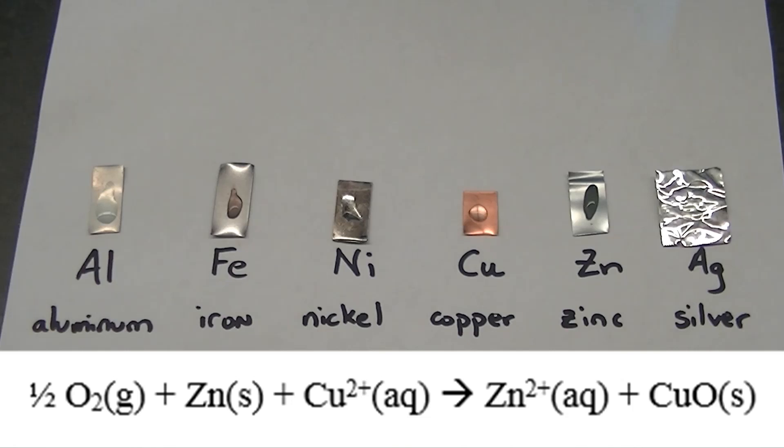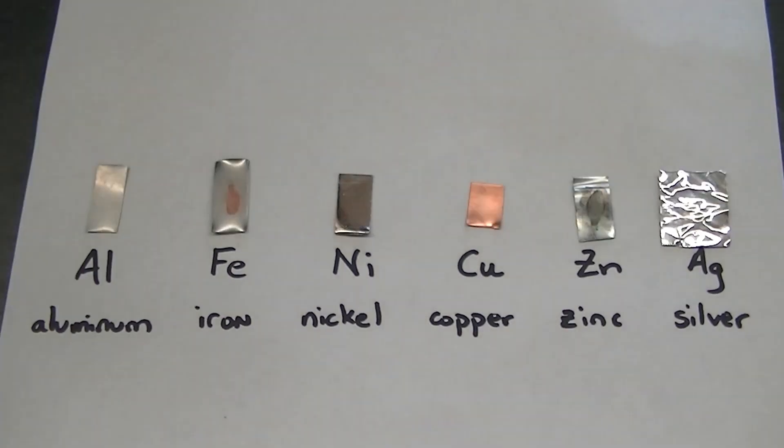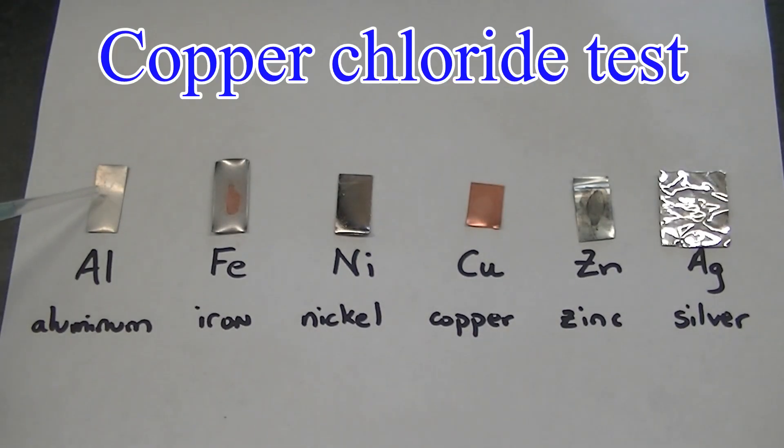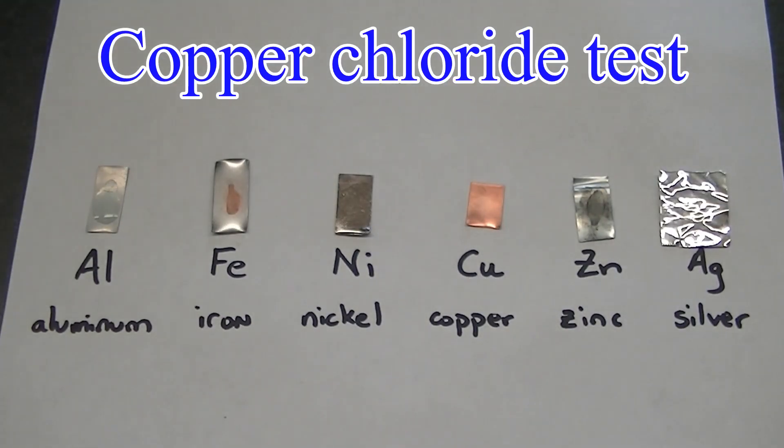This black color is most likely due to the formation of copper oxide, which is black in color. A possibility for how the copper oxide is formed is shown in the chemical equation below. It is also interesting to note that aluminum metal does not react with copper sulfate solution.